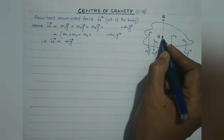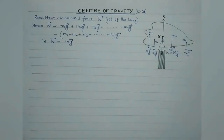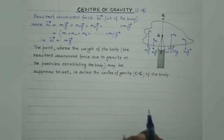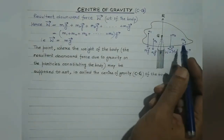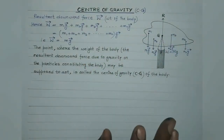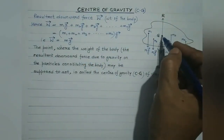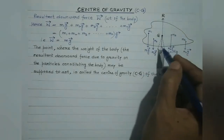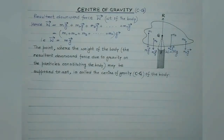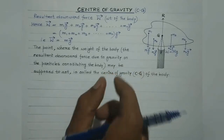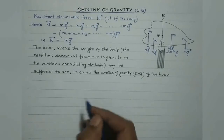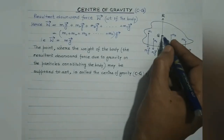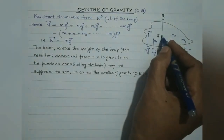This is the point where the weight of the body — the resultant downward force due to gravity on the particles constituting the body — may be supposed to be acting. This point is known as the center of gravity of the body. For translational equilibrium the net force must be zero, and the reaction equals the weight of the body.